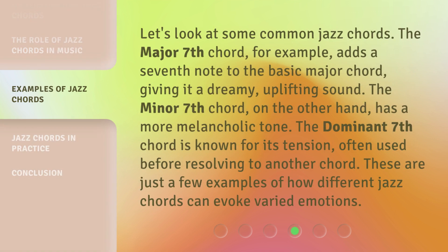Let's look at some common jazz chords. The major seventh chord, for example, adds a seventh note to the basic major chord, giving it a dreamy, uplifting sound. The minor seventh chord, on the other hand, has a more melancholic tone. The dominant seventh chord is known for its tension, often used before resolving to another chord. These are just a few examples of how different jazz chords can evoke varied emotions.